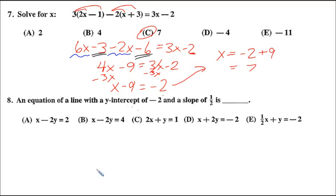Number eight, an equation of a line with a y-intercept of negative two and a slope of one-half is blank. Notice that all of these are in standard form.